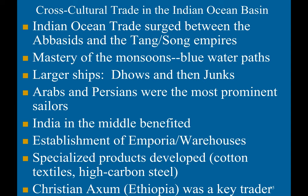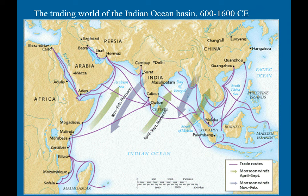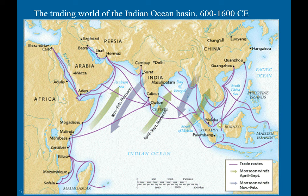Interestingly, Christian Axum in Ethiopia was actually a key trader — notable given how little we typically learn about the role of African civilizations in world trade. This simplified map of the Indian Ocean trading world from 600 to 1600 CE shows how monsoon winds blow northward from April to September and southward from November to February, creating a very predictable trading pattern, with routes going from coastal city to coastal city all the way from China to cities along the coast of eastern Africa.